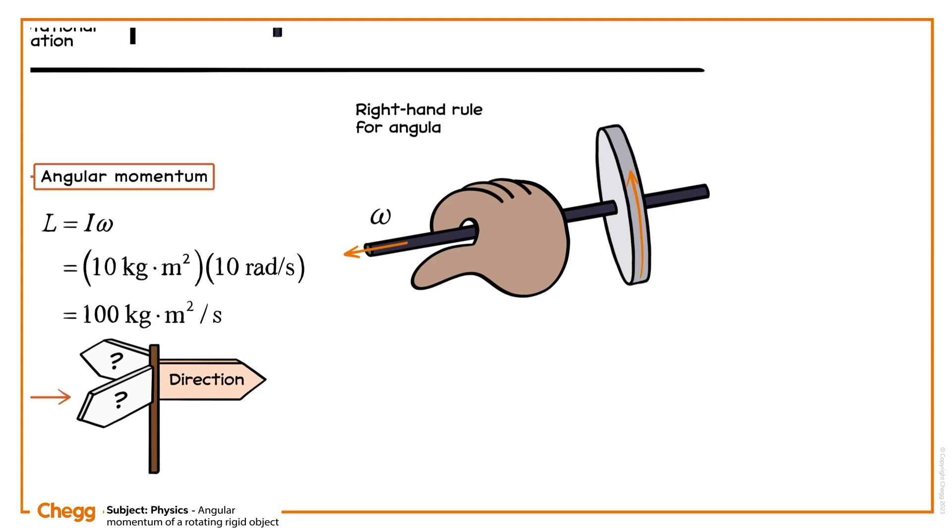So the direction of angular momentum is along the positive z-axis. So to give a complete answer to the question, the angular momentum of the disc is 100 kilogram meter squared per second along the positive z-axis.